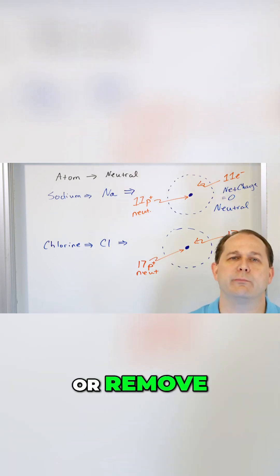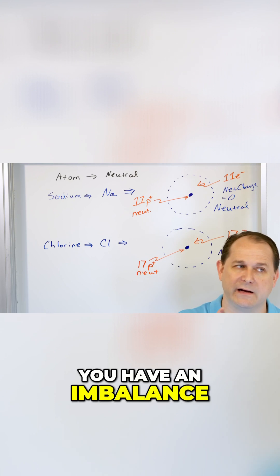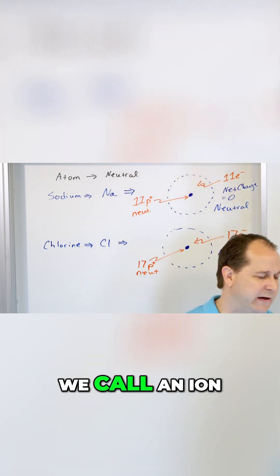Because you can add or remove electrons from an atom, and anytime you do that, you have an imbalance, a charge imbalance, which makes it what we call an ion.